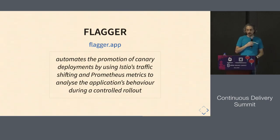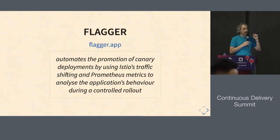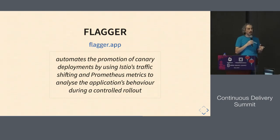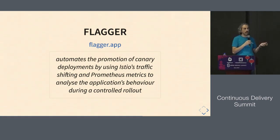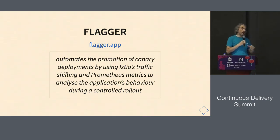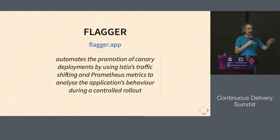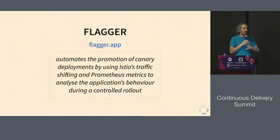Flagger is an open source project from Weaveworks that automates the promotion of canary deployments. It uses Istio, creates Istio virtual services, and sends traffic to the new version. Every time you do a new deployment, it will modify Istio and say send 10%, 20%, 30%, 40%, 50% to the new version. It continuously monitors the Prometheus metrics and checks for errors. You can set whatever metrics you want — for example, if more than 1% of the requests are 500 errors, automatically do a rollback. It automates the whole process of checking your monitoring statistics and deciding how many users to send to the new version and whether to rollback or not.